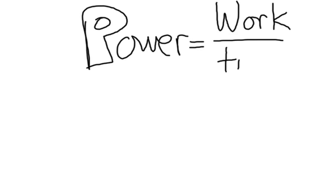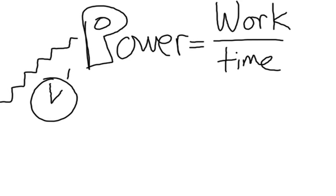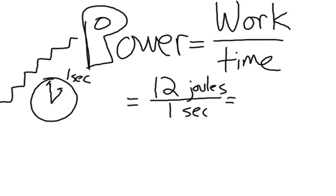And so power is defined as the amount of work in a given period of time. And so let's say that you were to go up that set of stairs with that can of coke and you were to do that in one second. Well the amount of work we have is going to be 12 joules. And the amount of time is going to be one second. And so the power of that is going to be 12 watts or W-A-T-T-S or watts is going to be the amount of power that we have.